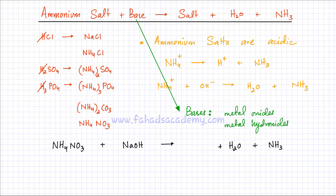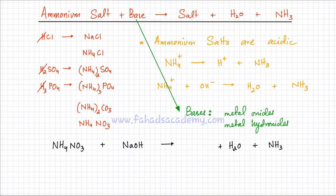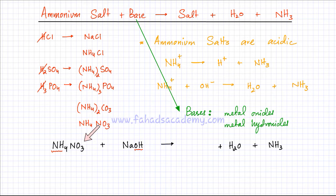We need to figure out what the salt is going to be. The ammonium ion lost its H+1 and got converted to ammonia gas, so we remove the ammonium ion from the list of ions forming the salt. Similarly, the OH- ion got converted into water. The leftover ions are sodium and nitrate. So the salt must be sodium nitrate, NaNO3 — Na is +1, NO3 is -1.